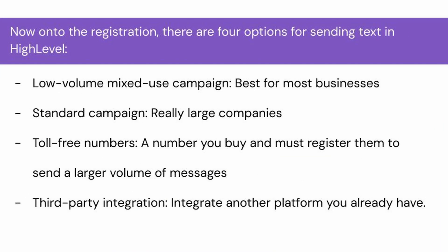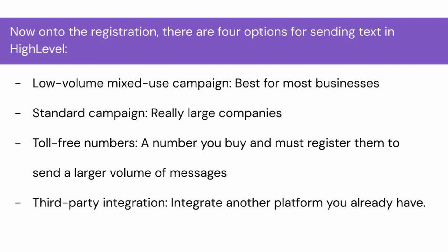Now onto the registration. There are four options for sending text in High Level, which include low volume mixed use campaign, standard campaign, toll-free numbers, and third-party integration. Low volume mixed use campaigns are the best choice for most businesses. Standard campaigns are for really large companies. A toll-free number is a number you buy and you must register them to send a larger volume of messages. And lastly, third-party integration is when you integrate another platform you already have.